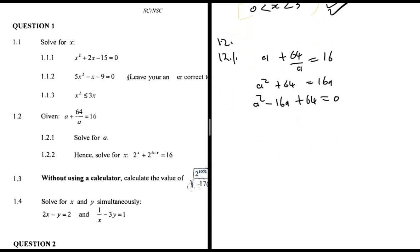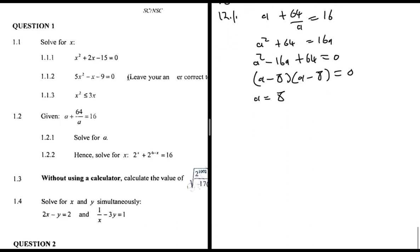Factorizing: which two numbers multiply to 64 and add to -16? That's -8 and -8. So (a - 8)(a - 8) = 0, giving a = 8.